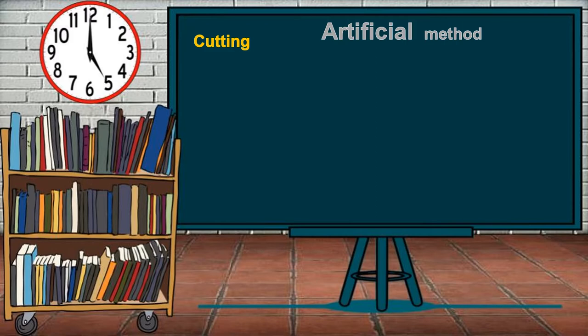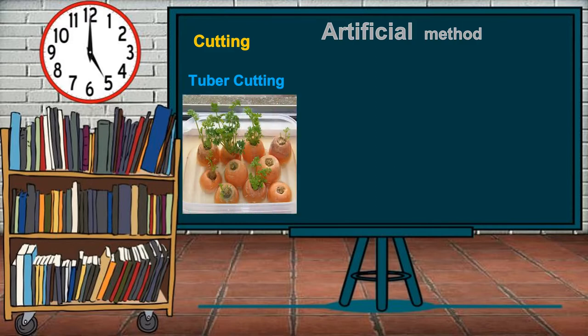The first class is tuber cutting. Tubers are a thickened portion of either a leaf or stem. In making tuber cuttings, one eye or bud is left on each piece. Examples are kamote, ube, and carrot. The second is root cutting, where the roots are cut into pieces and planted horizontally in the soil. Examples are guava, jackfruit, and citrus.